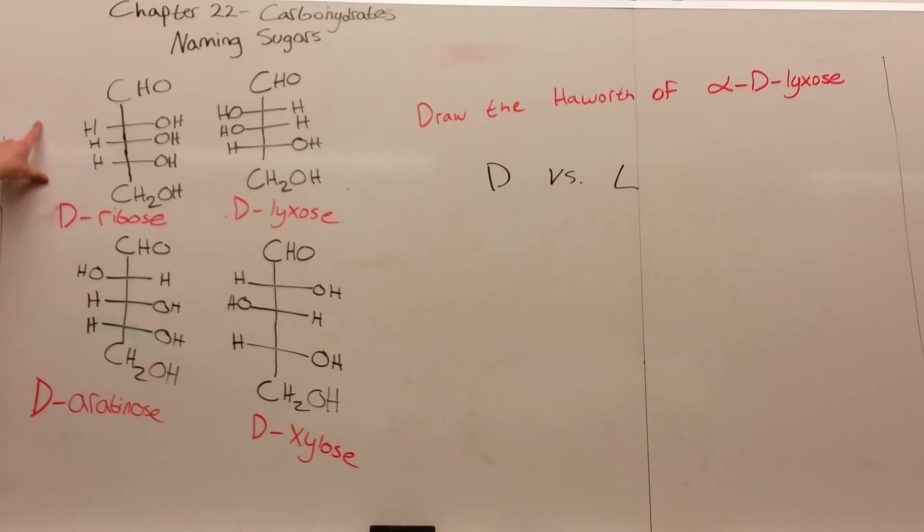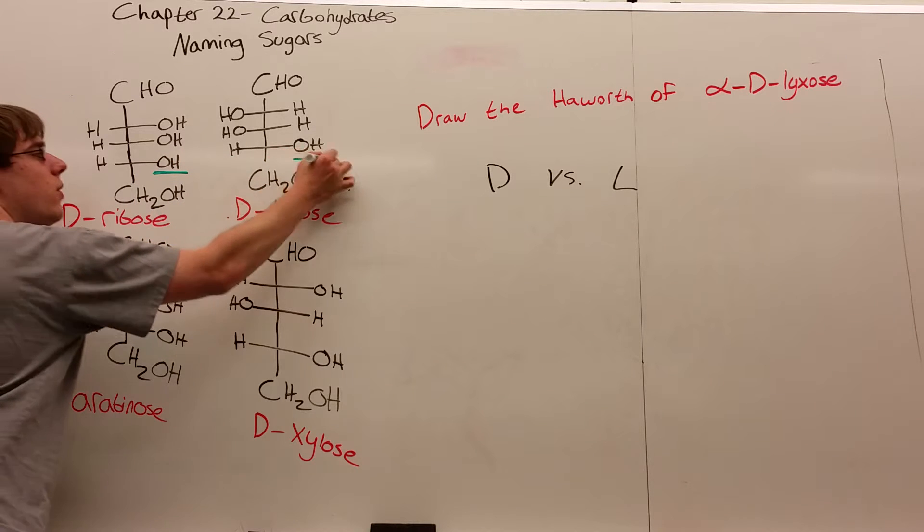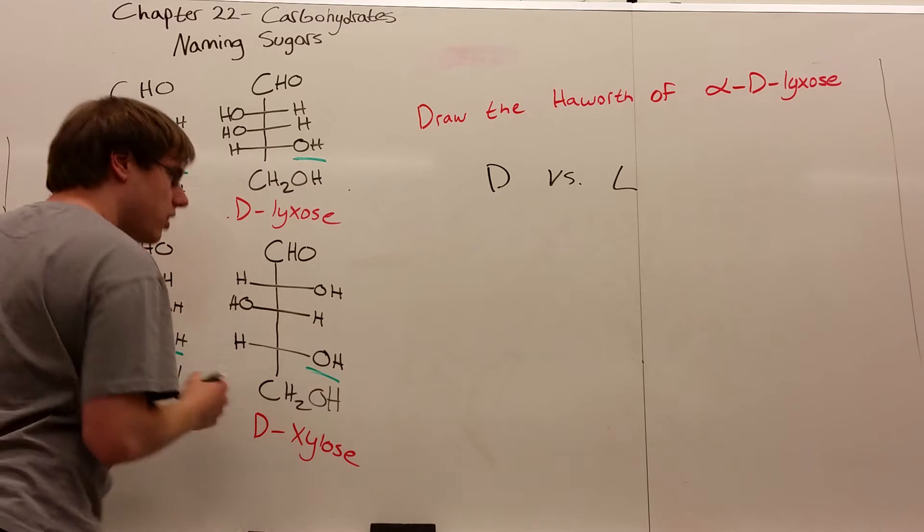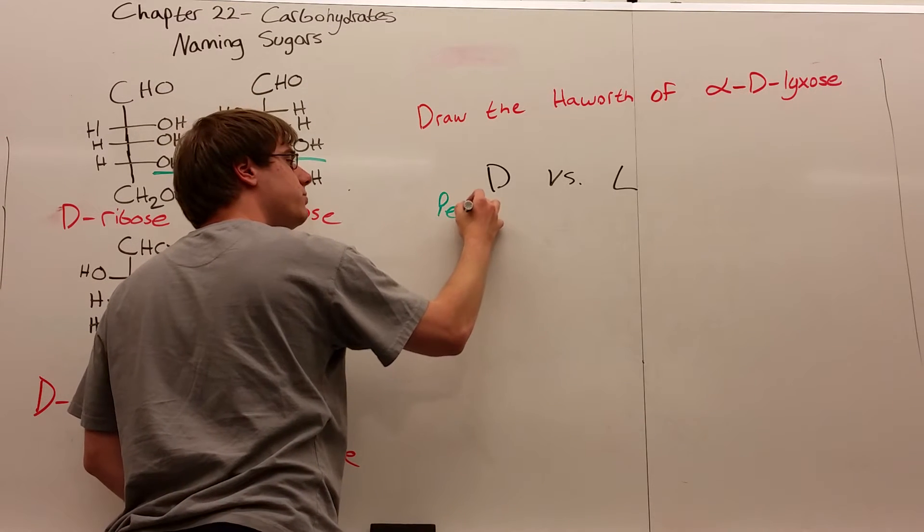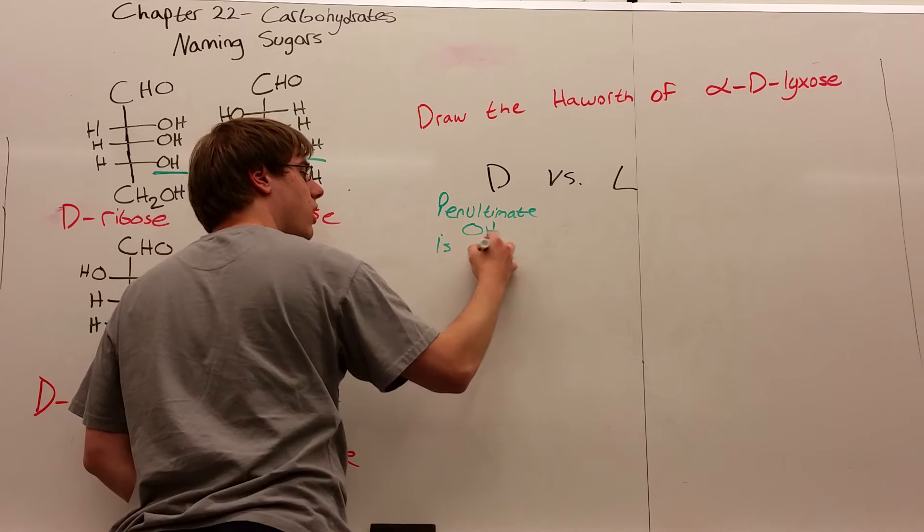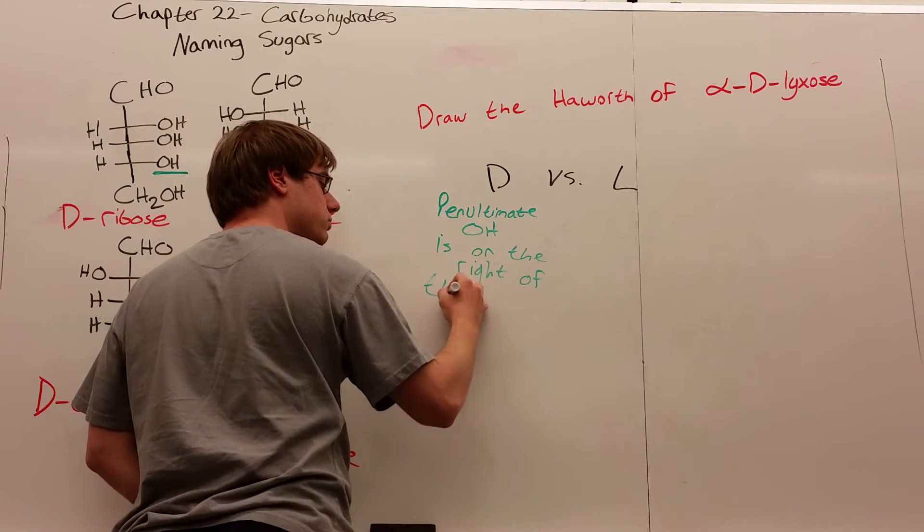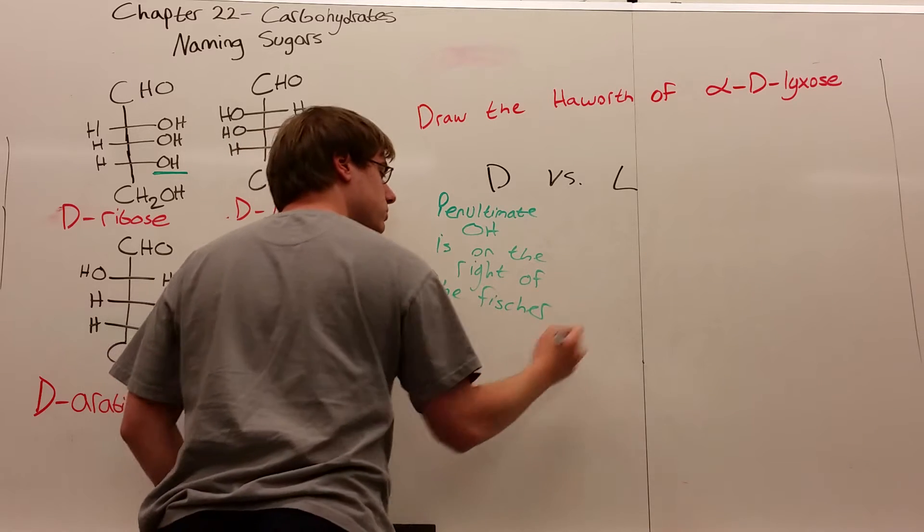I have here four D-pentoses—five carbon sugars that are aldoses because they have CHO groups. They are all D sugars, and what they all have in common is their penultimate OH is on the right. In a D sugar, the penultimate OH is on the right of the Fischer projection.